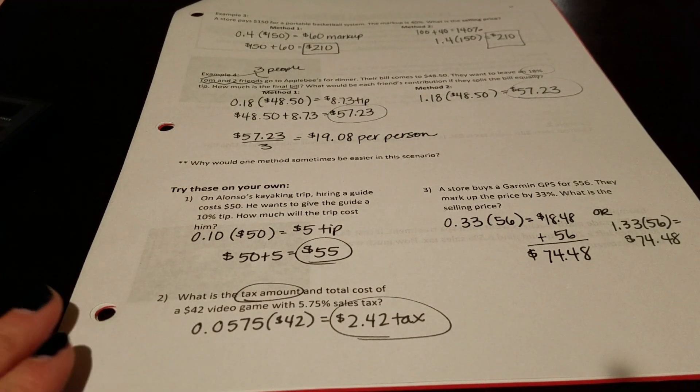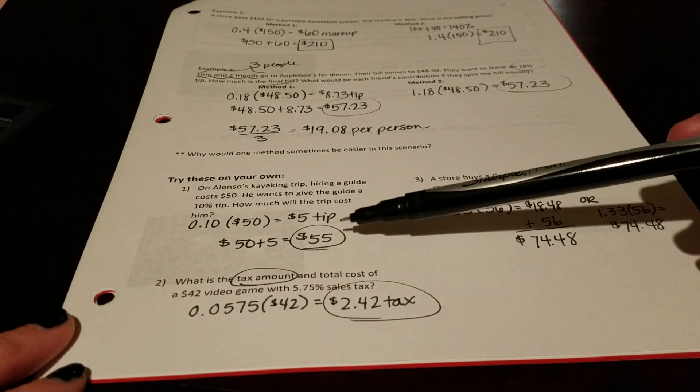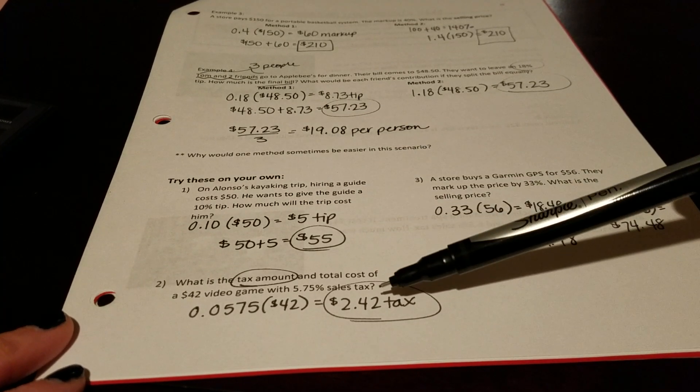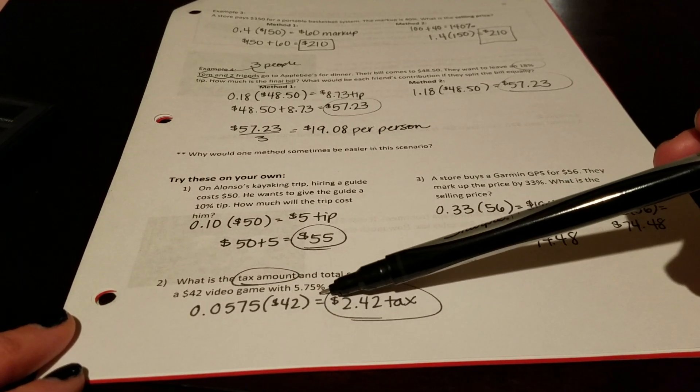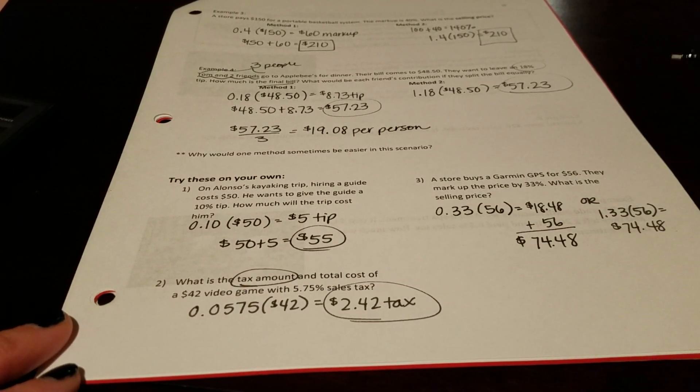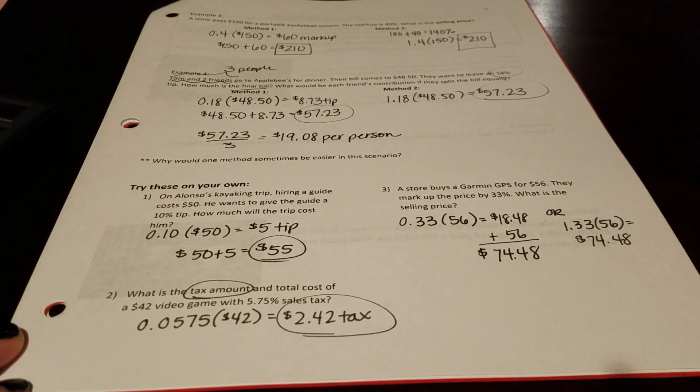So here you go. These are the answers to these questions. So if I look at number one, $55. Number two, you have to be careful. It just asks for the tax amount, not the total. So you actually just need to multiply the sales tax rate by the price. And lastly, number three, I showed you method one and method two here for the selling prices.